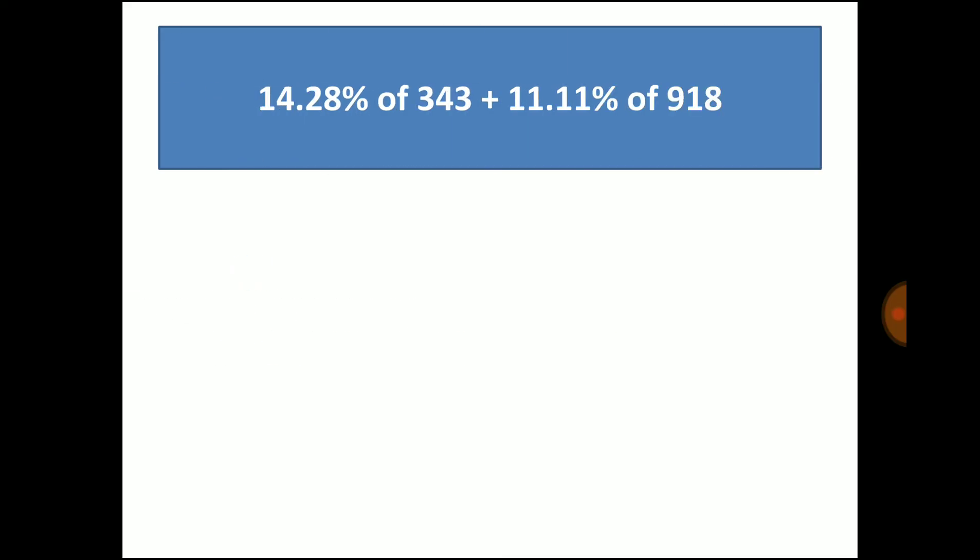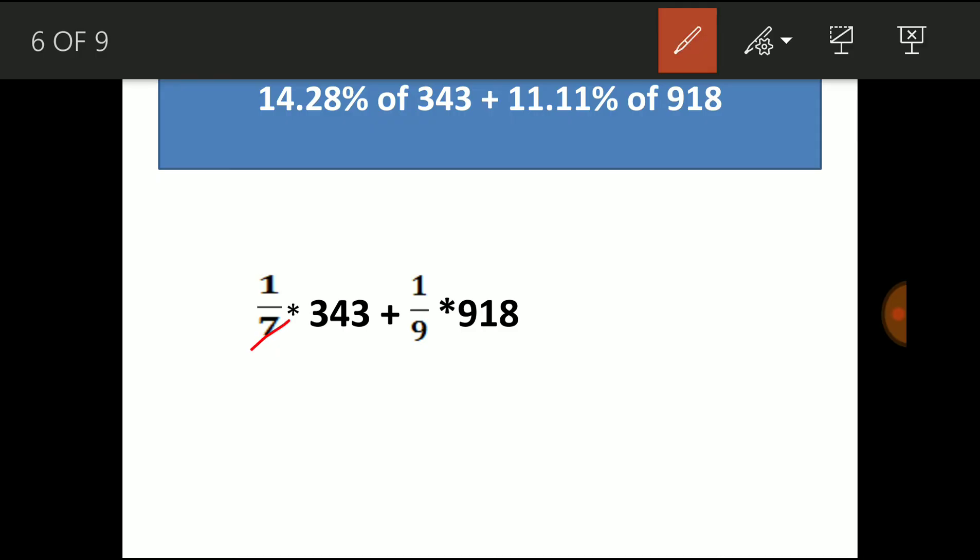Now you have another example. 14.28% of 343 plus 11.11% of 918. We can use the same method. So instead of 14.28, we can make it as 1 by 7 and 11.11% we can make it as 1 by 9. So 7 into 49 is 343. 102 into 9 is 918. So 49 plus 102, you get 151. So 151 is the answer of this question. 14.28% of 343 plus 11.11% of 918.